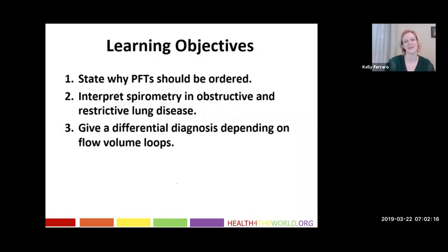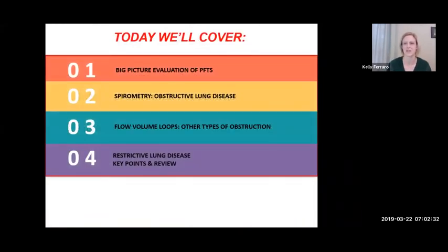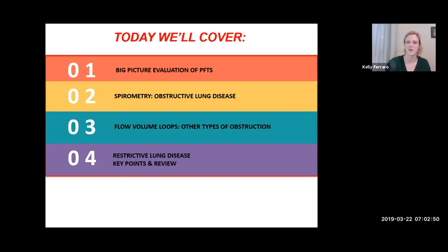Today we'll make sure that we can state why pulmonary function tests can be ordered or should be ordered. We will be able to interpret spirometry in obstructive and restrictive lung disease, and then give a differential diagnosis depending on flow volume loops. I've divided this into four parts: a big picture evaluation of pulmonary function tests, spirometry and obstructive lung disease, flow volume loops, and then restrictive lung disease.